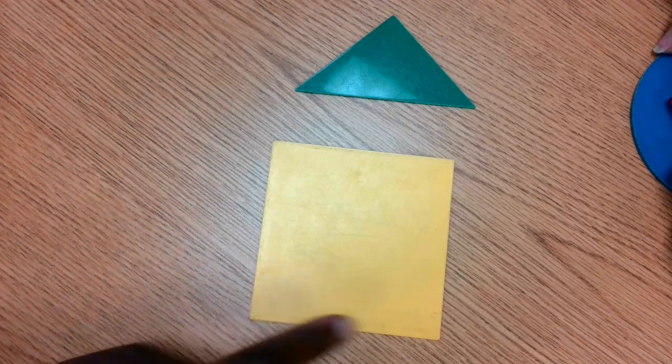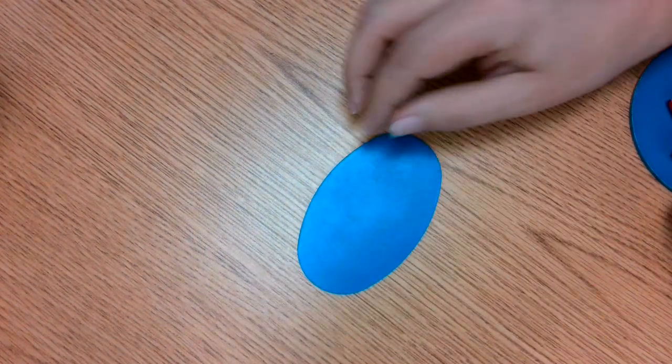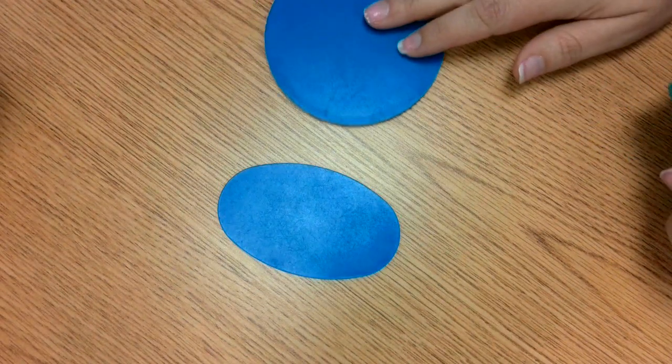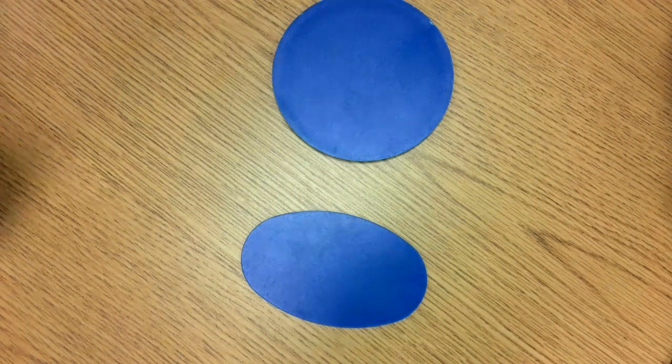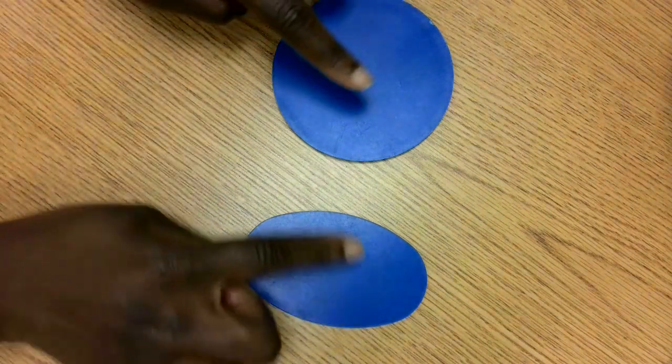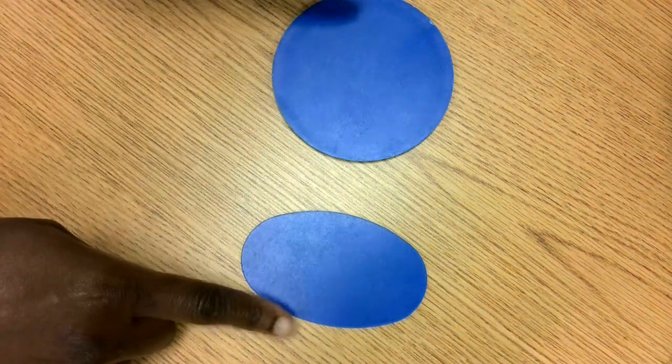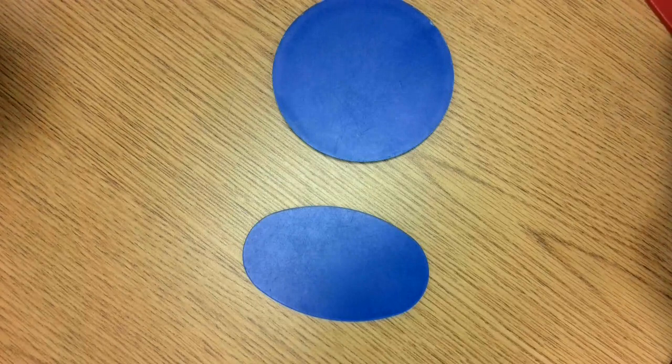Let's get two more shapes. We have our oval and a circle. Can you compare or tell me something that's the same about these two shapes? Well, both have a large curve. They have no sides and no vertices or corners. Great.